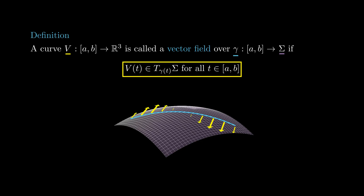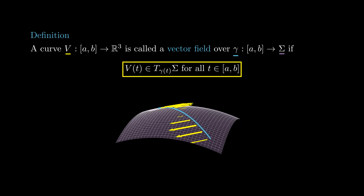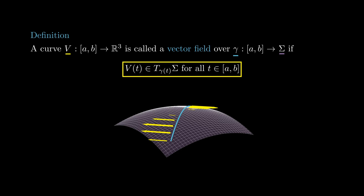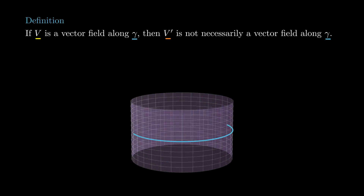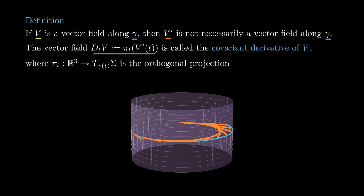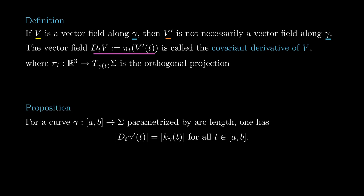Given a curve gamma on a surface, we say that a curve V, parametrized over the same domain, is a vector field along gamma if V(t) lies in the tangent plane to sigma at gamma(t) for all times. Notice that if V is a vector field along gamma, its derivative V'(t) is in general not a vector field along gamma. However, if for each time we project V'(t) perpendicularly to the tangent plane at gamma(t), it will be a vector field along gamma, which we call the covariant derivative of V, denoted D_t V. The length of the covariant derivative of the velocity of a smooth curve parametrized by arc length coincides with the absolute value of its geodesic curvature, so we think of D_t V as the acceleration of gamma relative to the surface sigma.